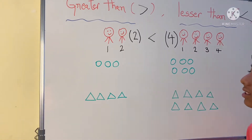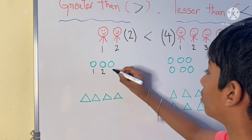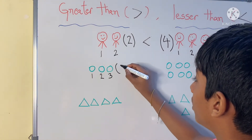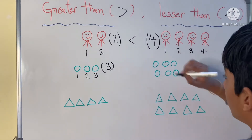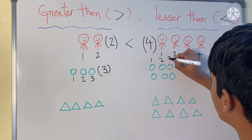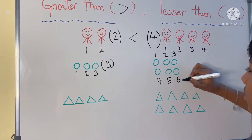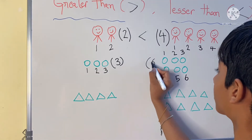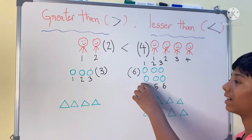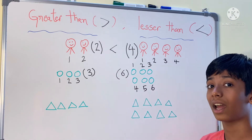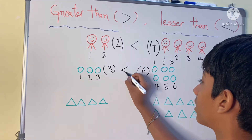Now let us do the circles. How many circles are there? 1, 2, 3 — there are 3 circles. And the next group: 1, 2, 3, 4, 5, 6 — there are 6 circles. Can you tell me the relation between 3 and 6? So 3 is lesser than 6.